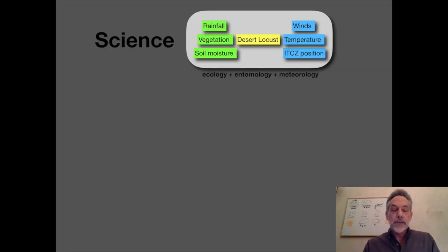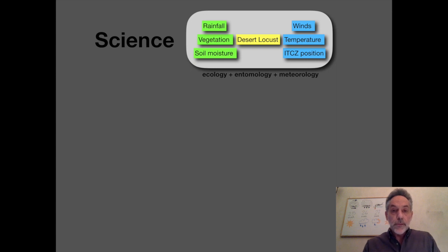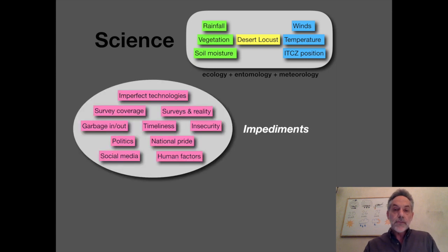That's the science of desert locust forecasting, and it involves disciplines such as ecology, entomology, meteorology, biology, botany, and many others. That science is quite simple and straightforward if we live in a perfect world — and unfortunately we don't. As a result, there are a lot of impediments to this so-called perfect science, involving technologies, sampling, data, and human factors.